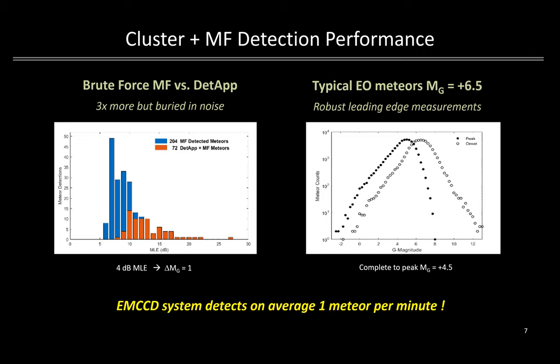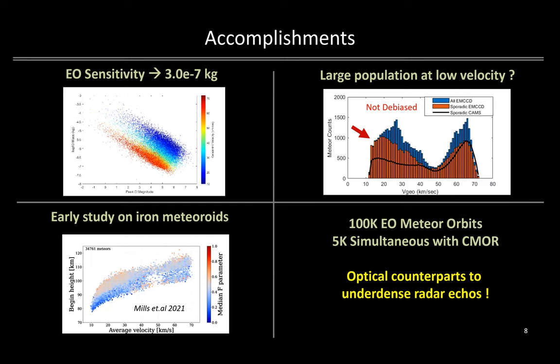This covers the region of under-dense radar echoes as seen from C-MOR, which was our stated goal at the project start. Collection is ongoing and we have achieved optical sensitivity down to approximately 3×10⁻⁷ kilograms at our fainter meteor limit, as shown in the upper left panel. In the upper right panel, there appears to be a significant component of low velocity sporadics. When the CAMS brighter and larger mass sporadic meteors, shown as the solid line, are normalized to the high velocity sporadic region of the EMCCD data shown in orange, there appears to be an excess at the low velocity end. I would highly caution that the data shown has not been debiased, so any conclusions would be premature. Still, it is an interesting feature seen in other very low light intensified meteor EO systems and warrants further investigation.